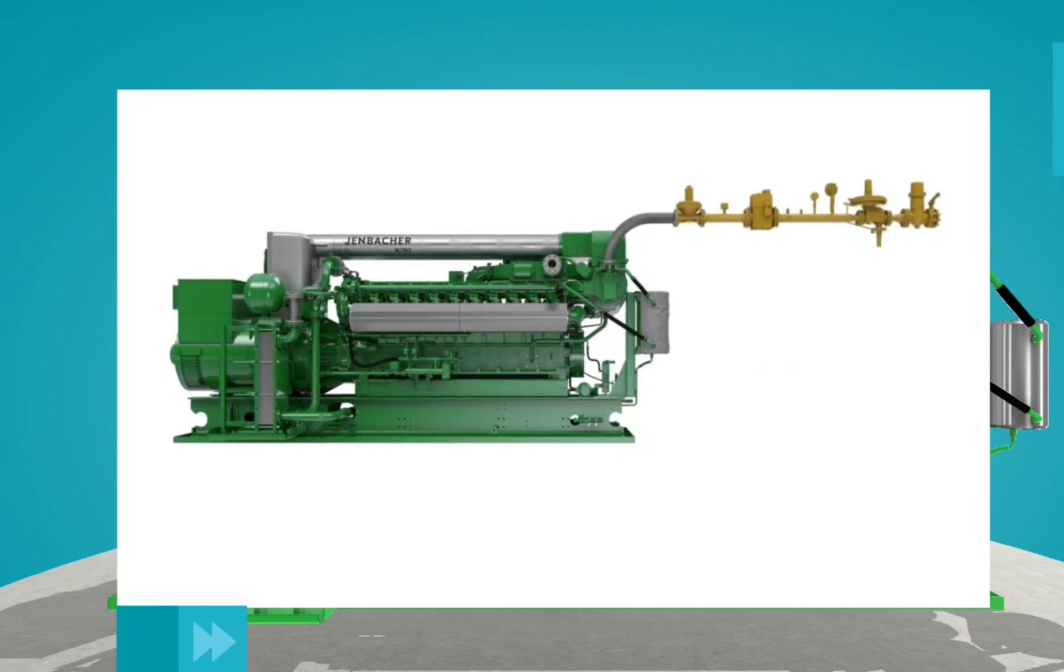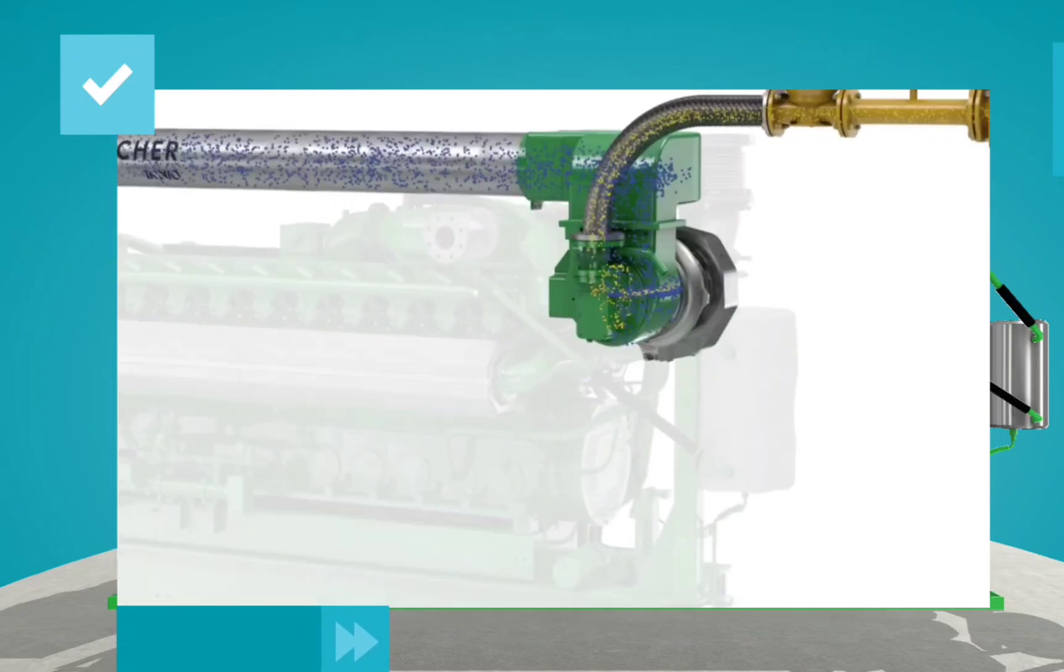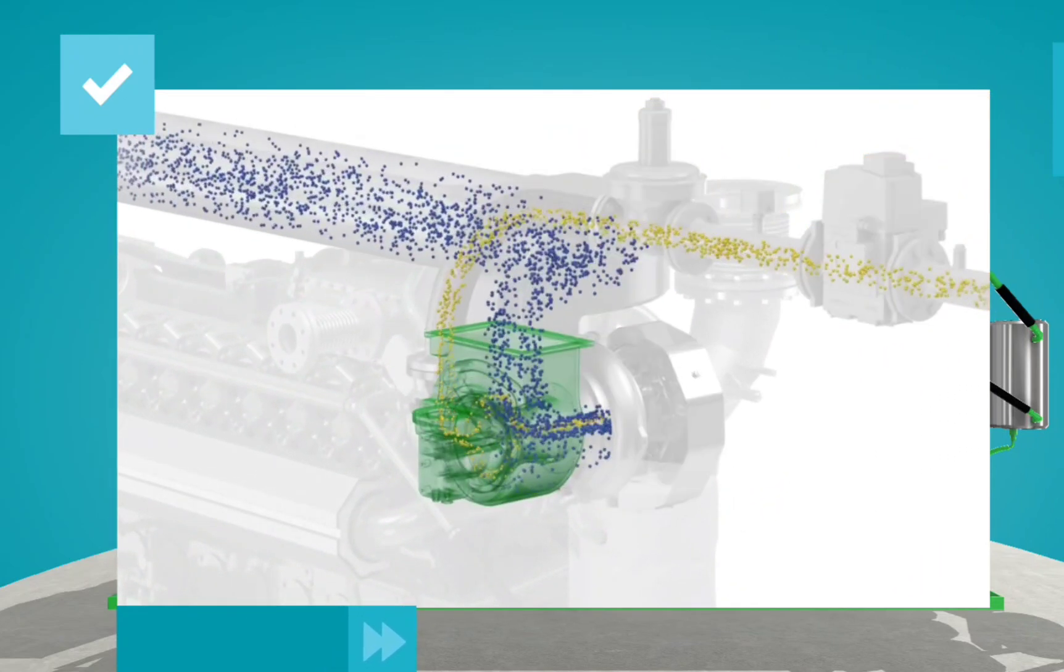Jenbacher gas engines are fueled by a mixture of air and gas. Air is sucked into the engine through the air filter, gas via the gas drain, and they are mixed together in the gas mixer.